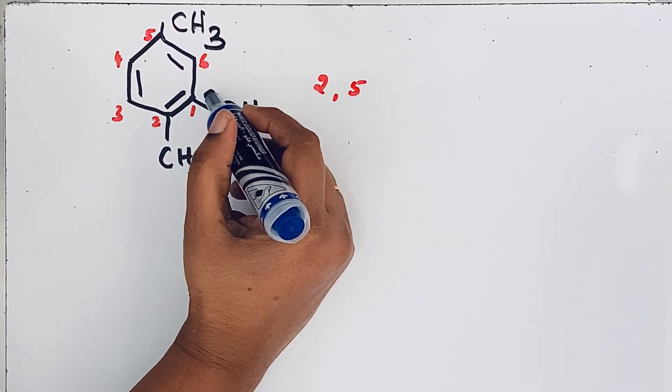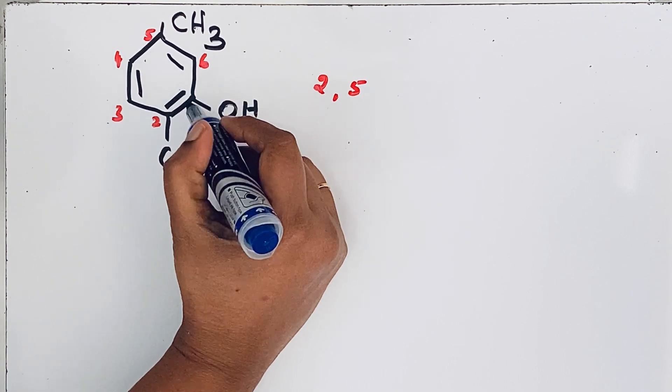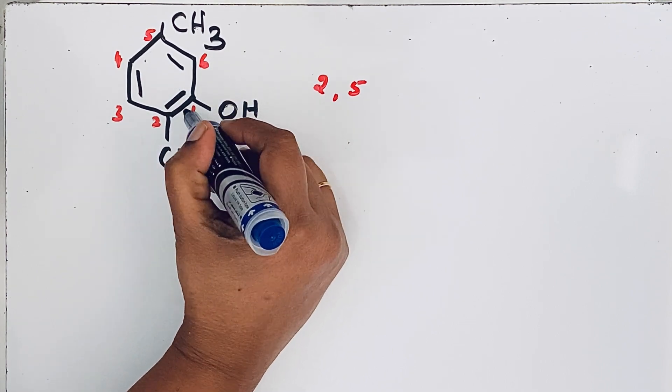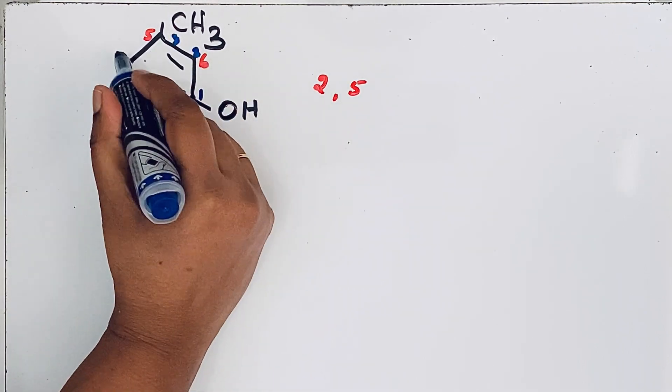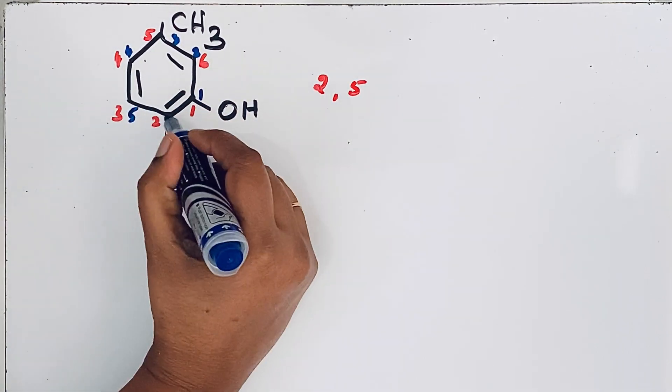In another way, we can give that anti-clockwise direction. In the anti-clockwise direction also, this OH group should get the lowest number. 1, 2, 3, then 4, 5, 6.